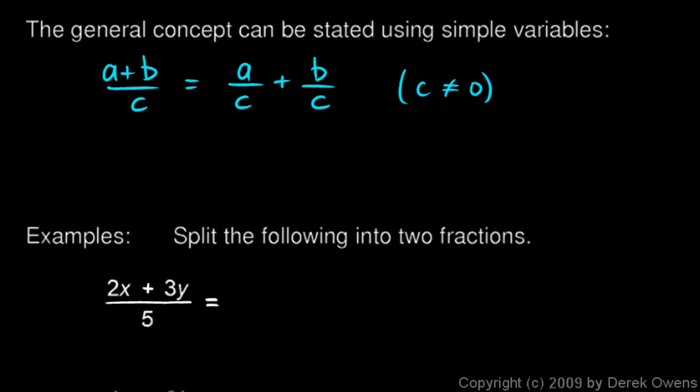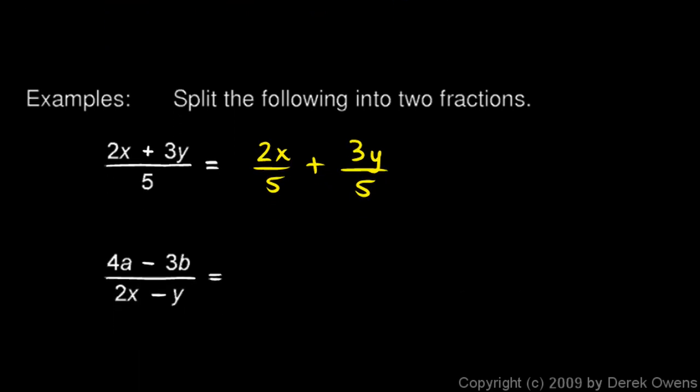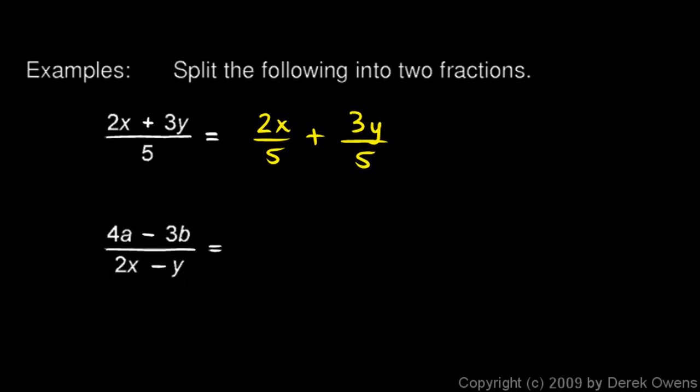2x plus 3y over 5 could be split up into two fractions like this: 2x over 5 plus 3y over 5. 4a minus 3b over 2x minus y. Remember, don't just chop it down the middle. To split this into two fractions, we have to do 4a over the denominator minus 3b over the denominator.